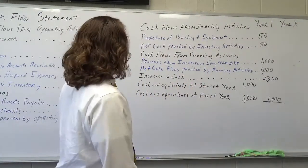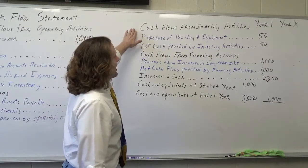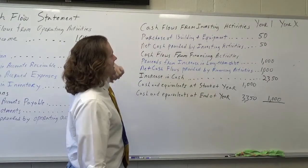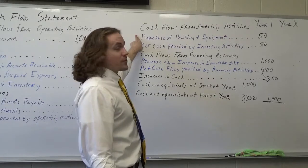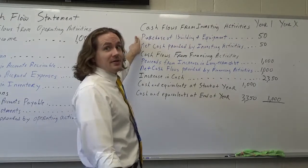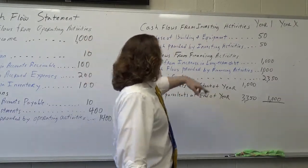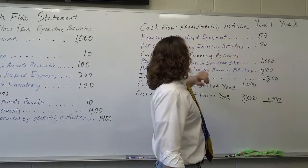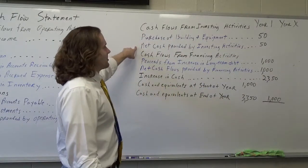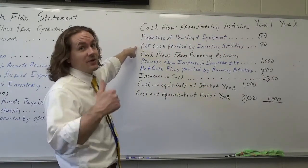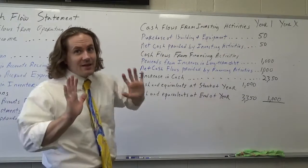Then you're going to take your cash flows from investing activities — a new category. I've purchased fifty dollars worth of equipment, maybe something for the building, and that fifty dollars is your net cash provided by investing activities, so subtract fifty.